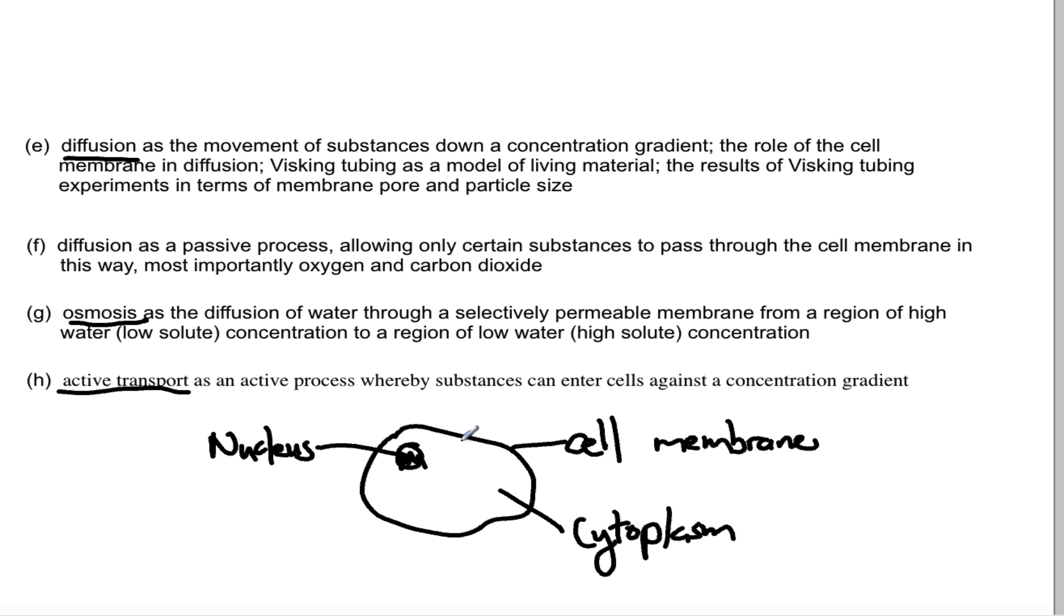Some substances are so tiny they don't need the proteins, they can just diffuse across. So diffusion is a passive process where substances move from an area of high concentration to an area of low. Osmosis being the specific diffusion of water across a selectively permeable membrane, and active transport which requires energy and always goes against a concentration gradient.